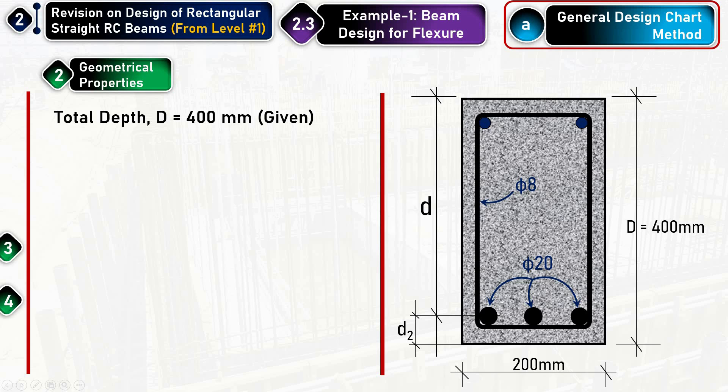For example, for this example I have here 3φ20 and I have the stirrup diameter to be φ8, it means 8 millimeter, and this φ20 is 20 millimeter. Now the total depth is 400.